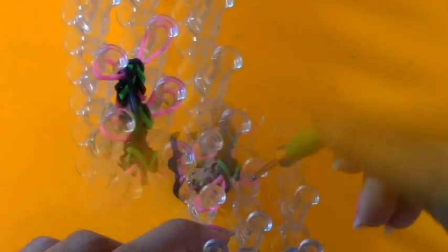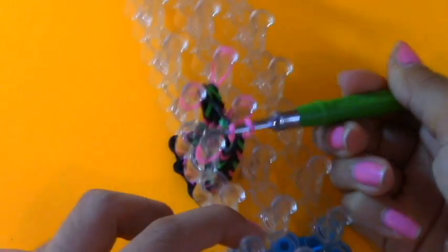Now there's only one row of bands. Do the same thing by pulling the vertical band up and over and you then are left with this. Take your hook and use it to collect all the bands still on the pegs by going in and taking the rubber bands off.